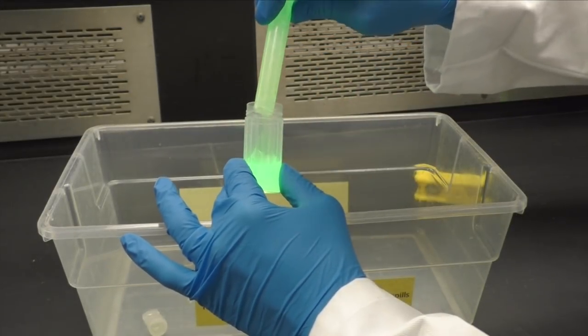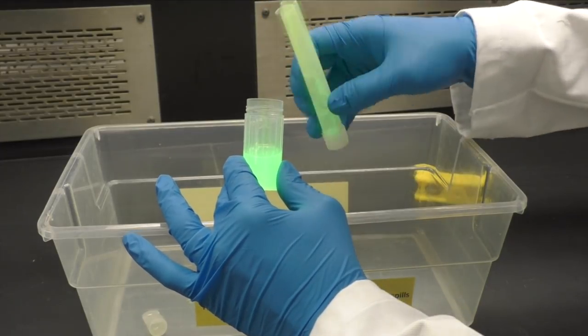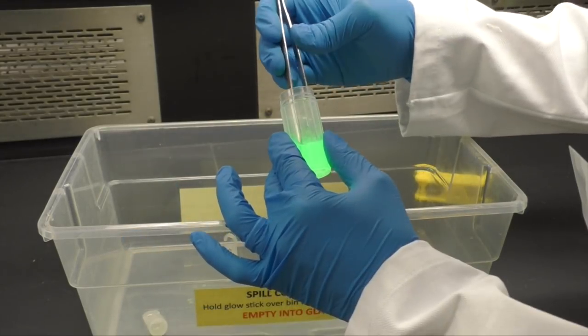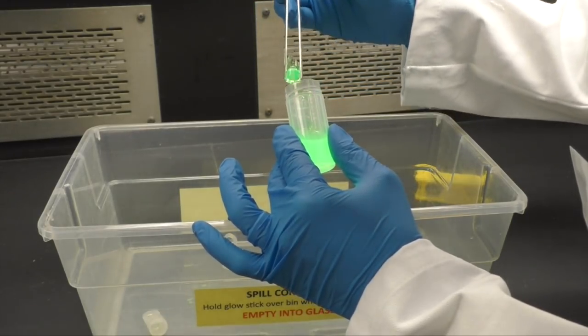Next, pour the glow stick solution into a 20 milliliter plastic vial while still holding it over the spill bin. If there are a lot of small glass pieces in your vial, use your forceps to transfer the pieces into the spill bin.